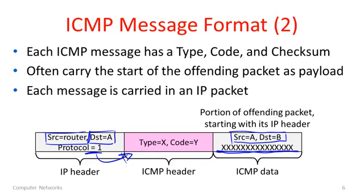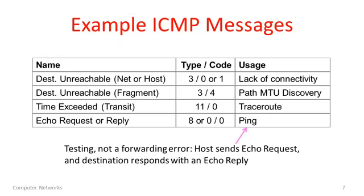Here are some examples of ICMP messages you might see on networks. There is destination unreachable — if you get a message about hosts or networks not being reachable, it's usually because your computer received a destination unreachable ICMP message when you tried to send to a destination and the network couldn't work out which way to send it. It will be type 3, with different codes depending on what's unreachable. Another kind is destination unreachable due to fragmentation — the network needed to fragment the packet but the don't-fragment bit was set so it couldn't, and this error message is returned. That's what's used to provide path MTU discovery, the mechanism we looked at in a previous segment.